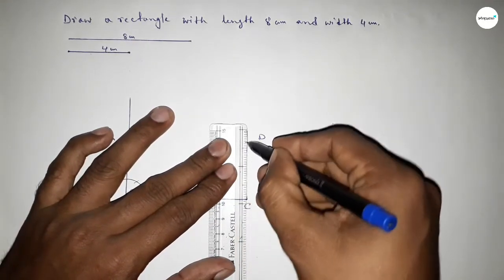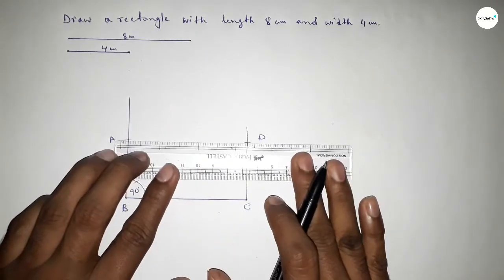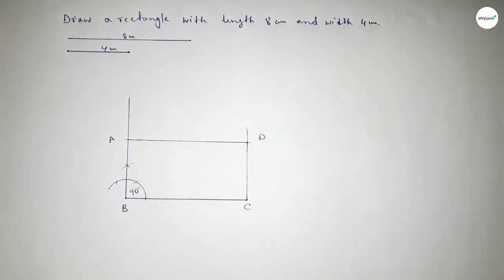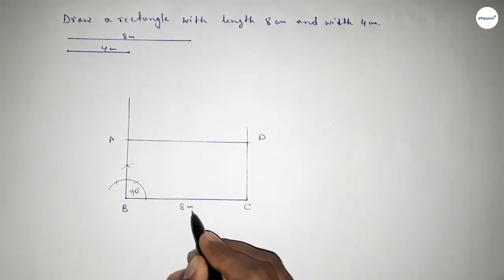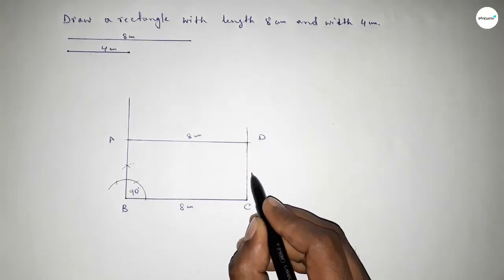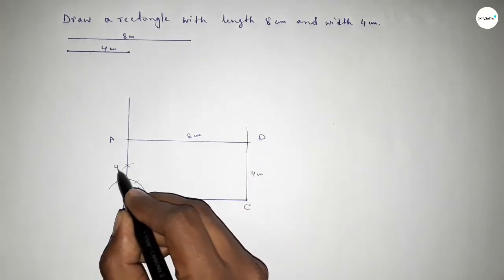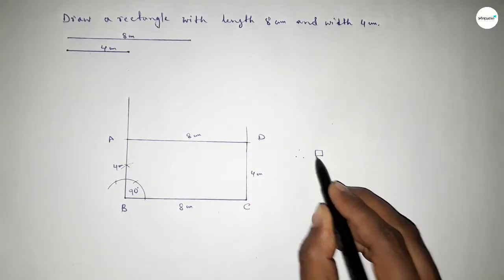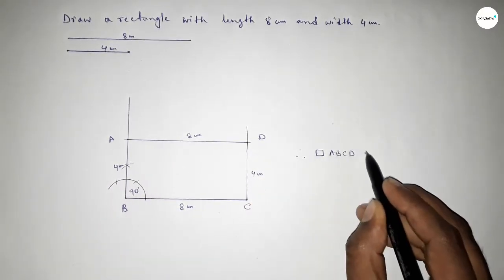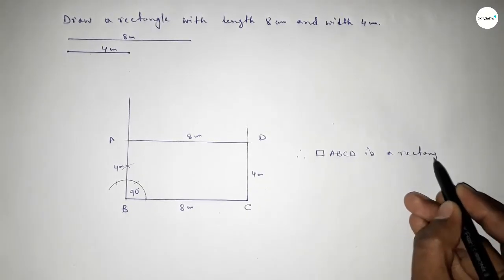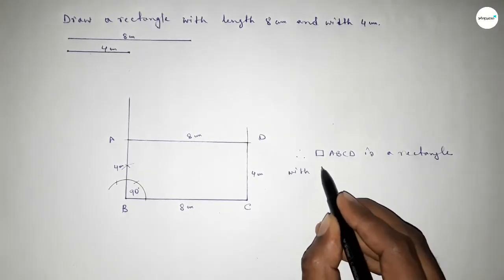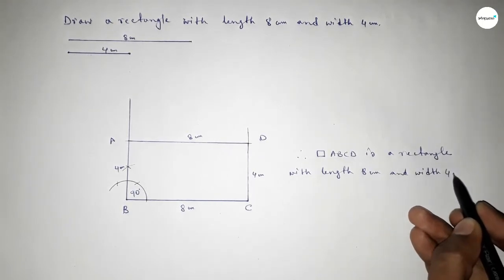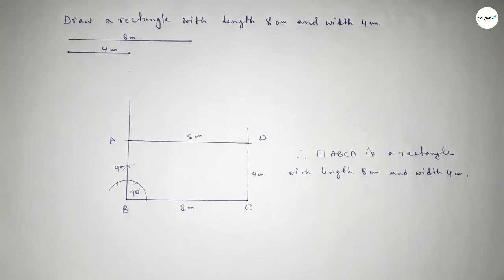Joining C and D, then joining A and D. So BC is 8 centimeters, AB is also 8 centimeters, and the widths are 4 centimeters each. Therefore rectangle ABCD — ABCD is a rectangle with length 8 centimeters and breadth or width 4 centimeters. That's all, thanks for watching. If this video is helpful to you then please share it with your friends.